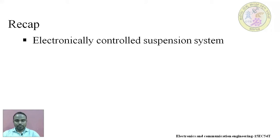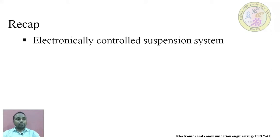We also saw how different sensors — such as wheel speed sensors, acceleration sensors, brake pedal sensors, and wheel-and-body distance sensors — were used in the electronically controlled suspension system. The electronically controlled system has its brain called the ECU, Electronic Control Unit, which comprises a microprocessor programmed by the manufacturer. That chip gets input from sensors, processes it accordingly.